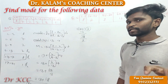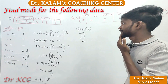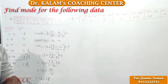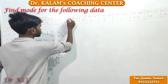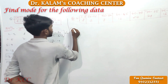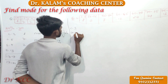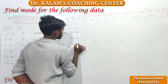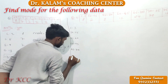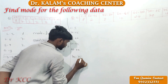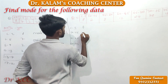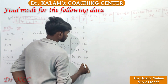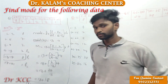Now you solve one by yourself. Try the second question. Rewrite the data again. Class interval: 50 to 55, 55 to 60, 60 to 65, 65 to 70, 70 to 75, and 75 to 80. Frequency: 2, 8, 12, 24, 38, and 16.